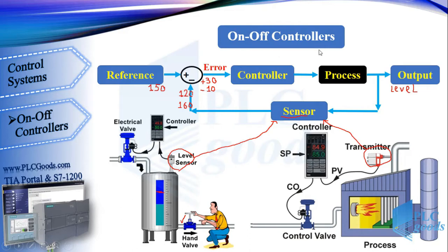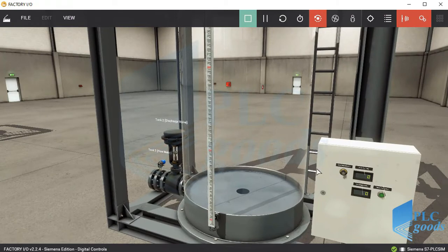On-off controllers are used when devices such as valves have only two modes: on and off. Therefore, when the error value is positive, the controller can only open the inlet valve and close it when the error is negative. Note that in this control method, the error sign is important, not its amount. Let's see how this controller works.